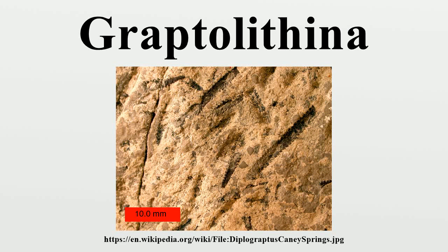Graptolithena is a class of hemichordate animal, the members of which are known as graptolites. Graptolites are fossil colonial animals known chiefly from the upper Cambrian through the lower Carboniferous. A possible early graptolite, Chaunagraptus, is known from the middle Cambrian.